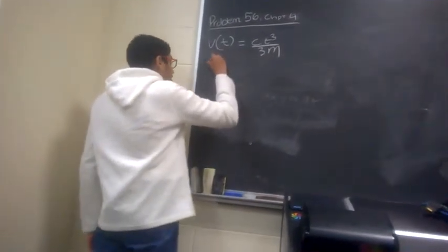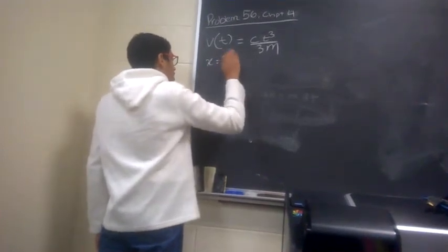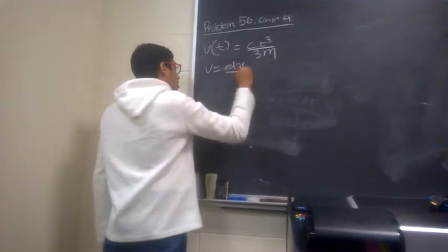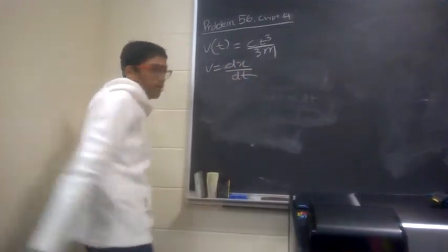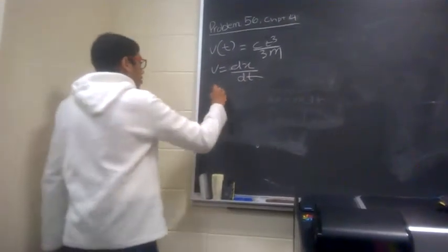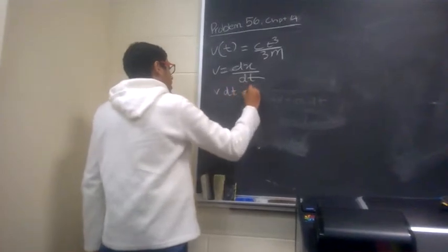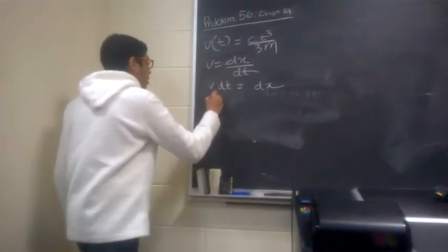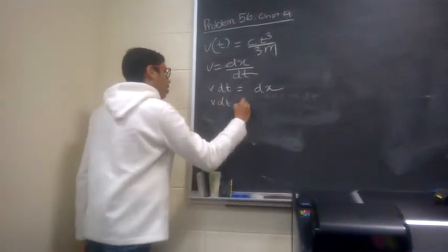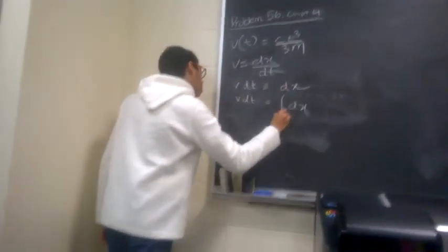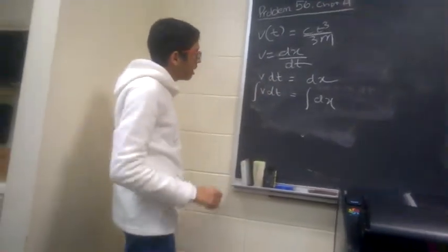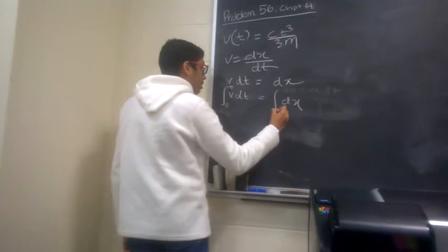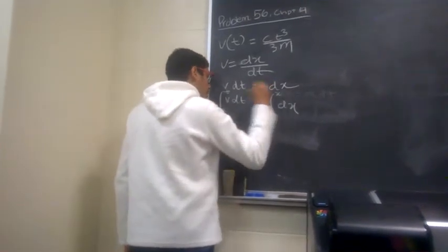So, we know that v is equal to dx over dt. So, we can say v dt is equal to dx. And now, integrating on both sides, the limit of integration here will be 0 to t, and for x, it is going to be 0 to x.